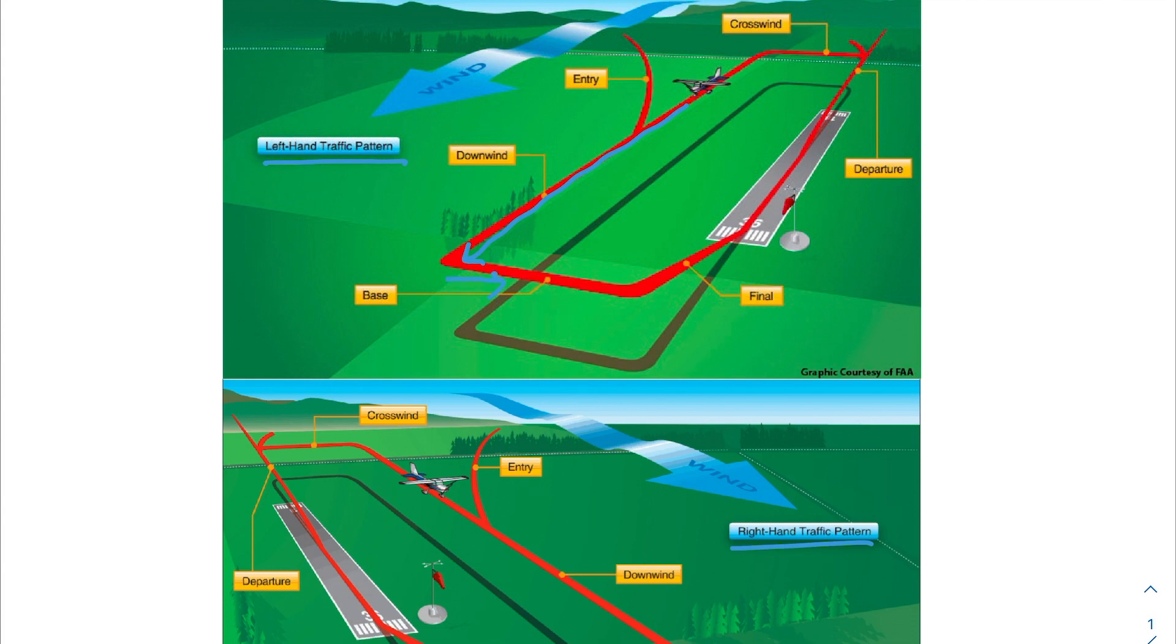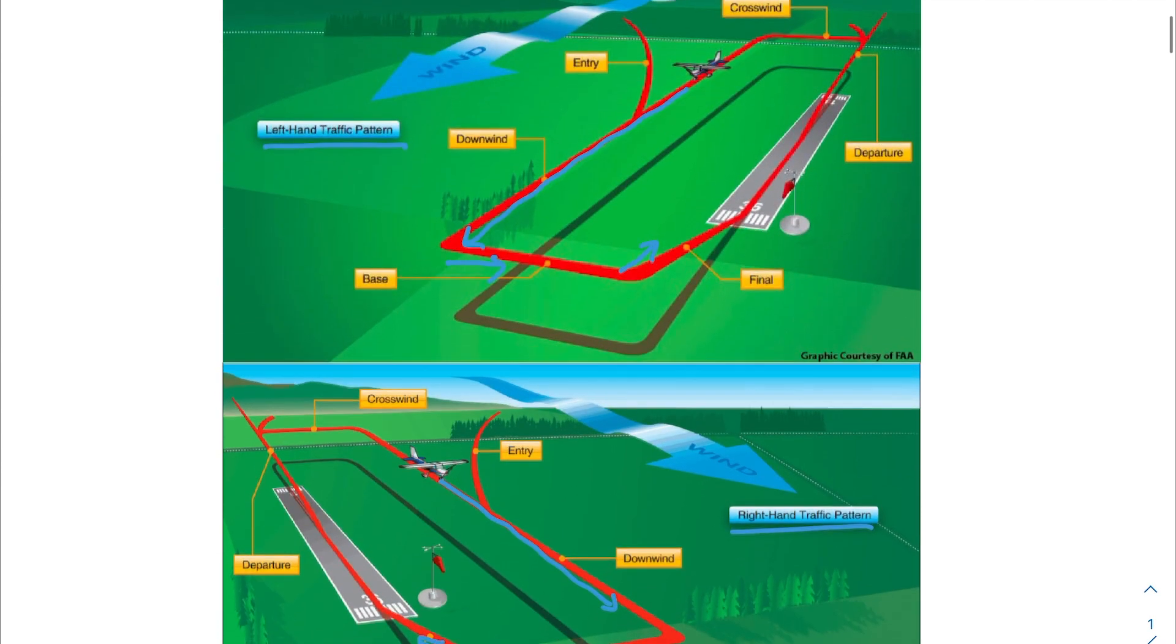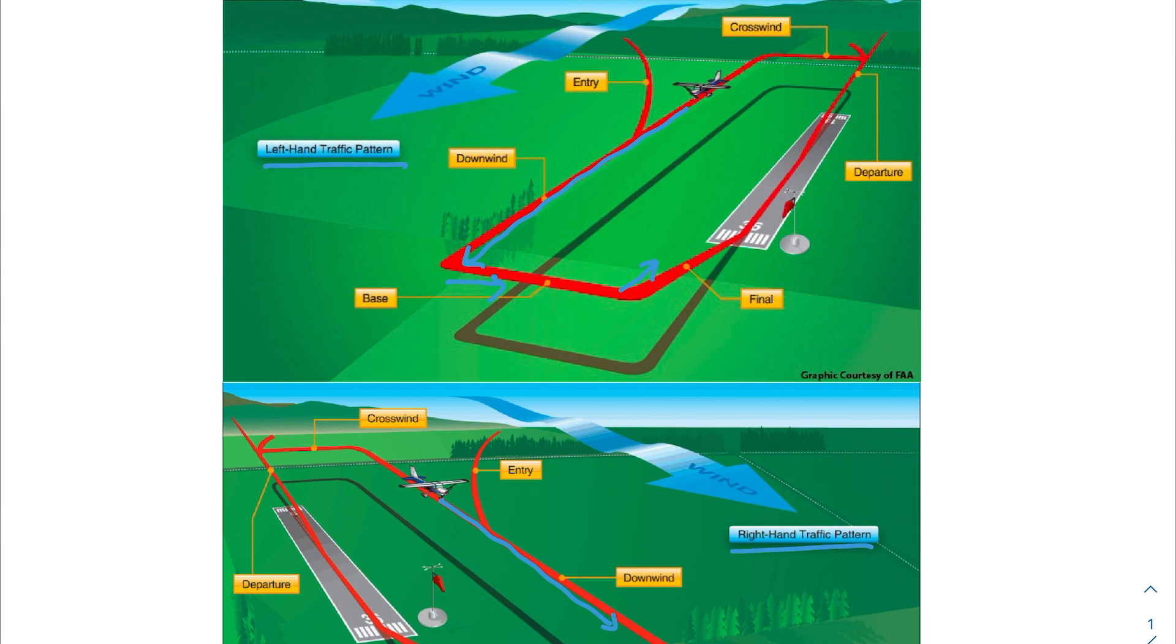And then once they get out of the base leg, they turn left again to enter that final leg. Versus in the right-hand pattern, as the pilot is going down the downwind leg, they turn right to enter the base leg. And then they turn right to enter the final leg. So it's really important to clarify whether you're doing left-hand or right-hand so that you don't crash into another airplane near you. That would be disastrous.